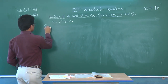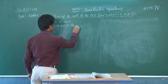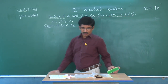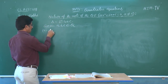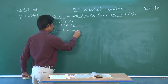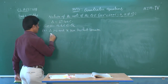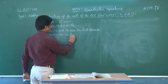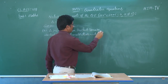Case 2: We are taking the coefficients A, B, C belonging to rational numbers. The first sub-case: if delta is greater than 0 and it is a perfect square, then the roots are rational and distinct.